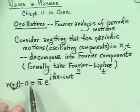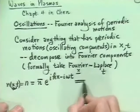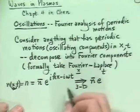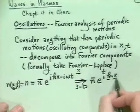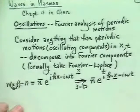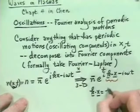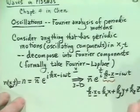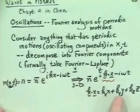We'll be thinking in one dimension, but often we'll need to go to three dimensions with x, y, z. In three dimensions, the density becomes n̄ times e^(ik·x - iωt), where k·x means k_x·x + k_y·y + k_z·z. Sometimes we only need k_x, and other times we need all three components k_x, k_y, and k_z.